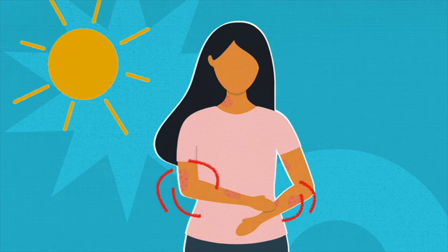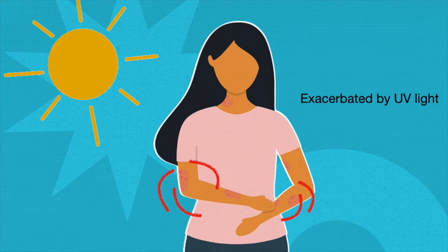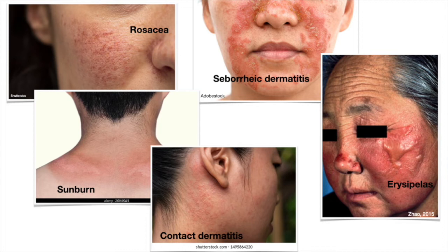ACLE is typically precipitated or exacerbated by exposure to UV light, and symptoms may last hours, days, or weeks. Differentials of ACLE include rosacea, seborrheic dermatitis, sunburn, contact dermatitis, and erysipelas.